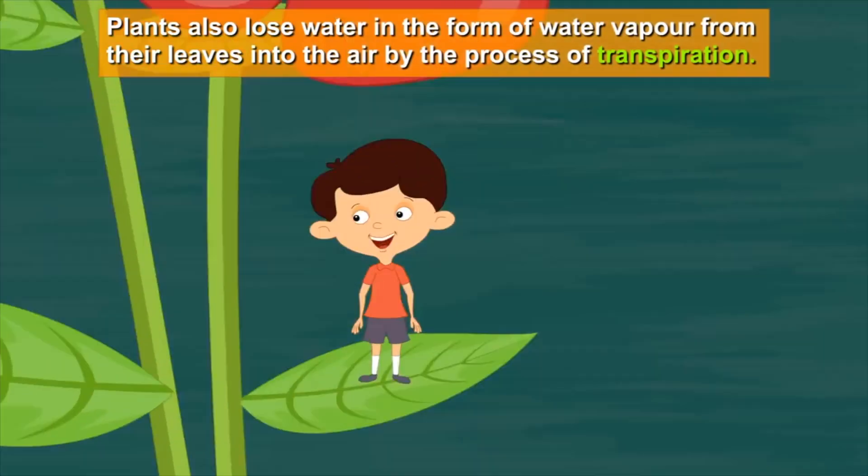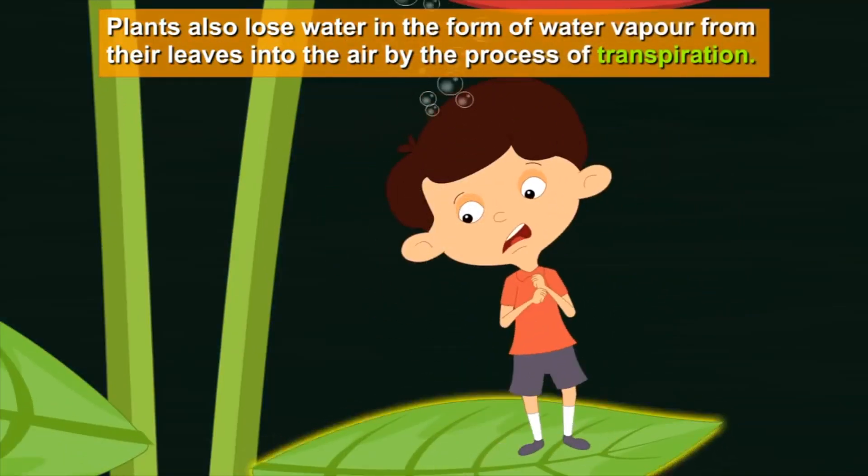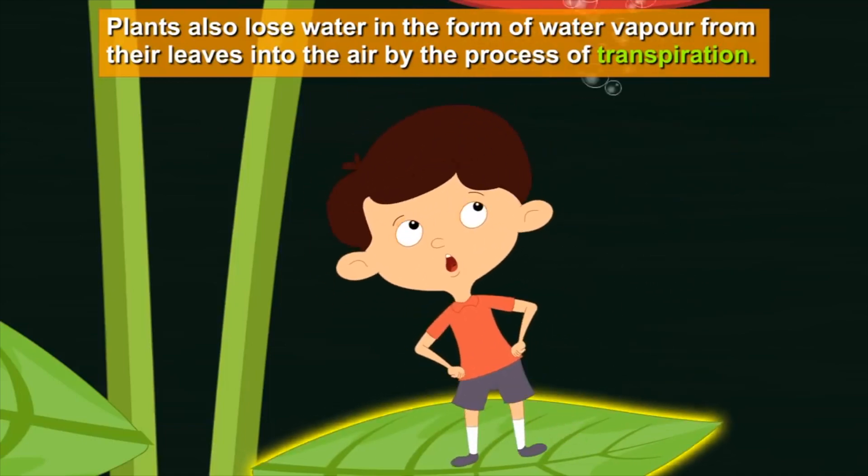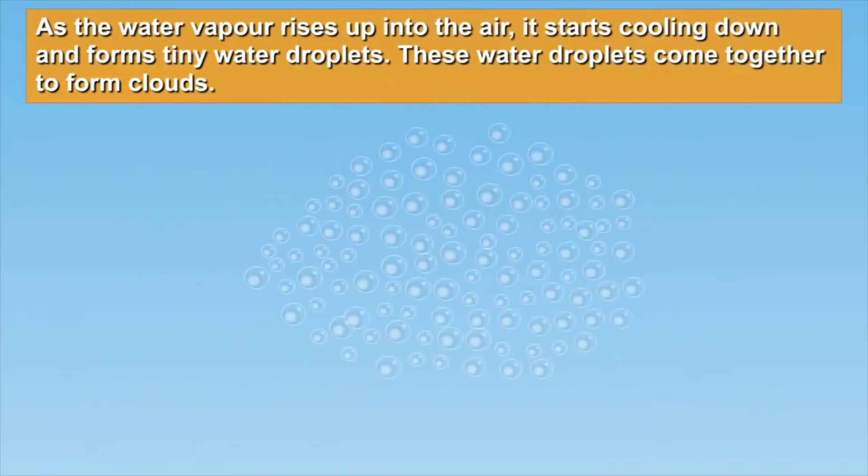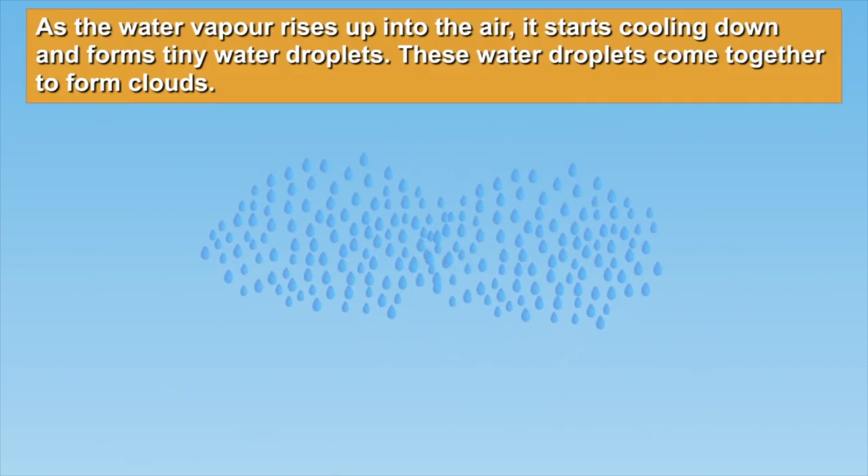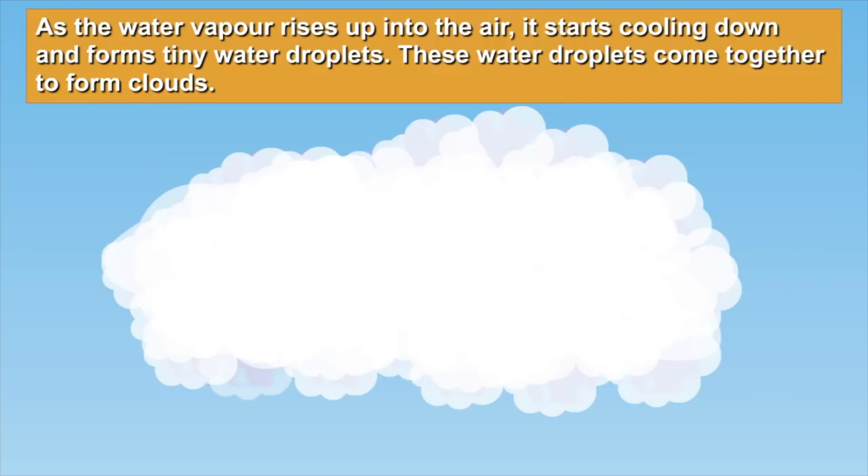Plants also lose water in the form of water vapor from their leaves into the air by the process of transpiration. As the water vapor rises up into the air, it starts cooling down and forms tiny water droplets. These water droplets come together to form clouds. This process is called condensation.